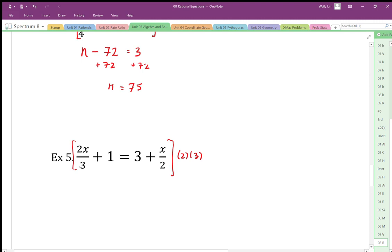So the times 3 divide 3 cancel, so I'm left with 2x times 2. That 1, nothing cancels, so I'm going to times it by 6. Nothing cancels with the 3, so I'm going to times the 3 by the 2 times 3, which is 6.